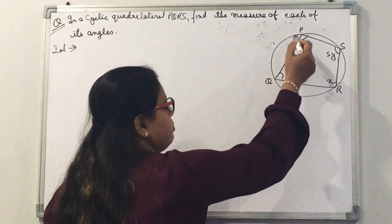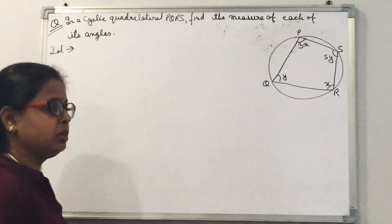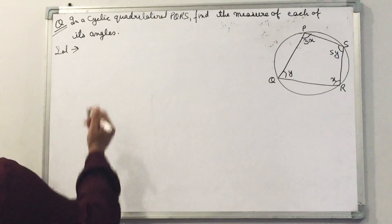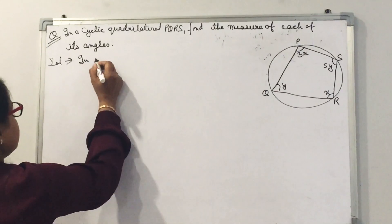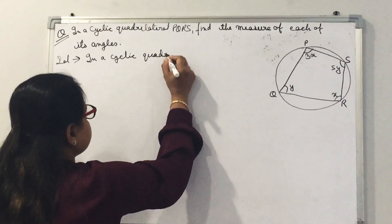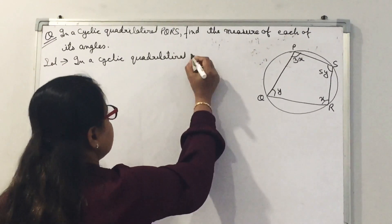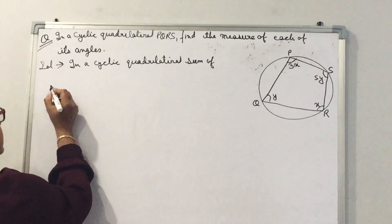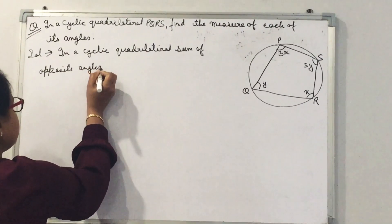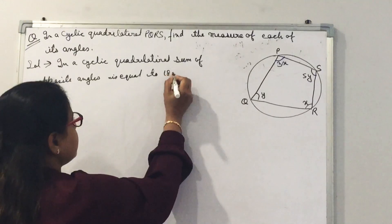It means PQRS is a cyclic quadrilateral and we have to find out the values of each of the angles. First of all, I would like to tell you that in a cyclic quadrilateral, the sum of opposite angles is equal to 180 degrees.